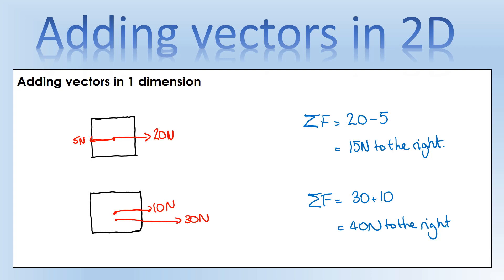This is the symbol we use for resultant force - it's a Greek capital sigma letter, which in mathematics means 'sum of', so resultant force literally means sum of the forces. That's what we've met before.